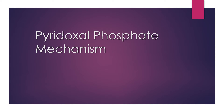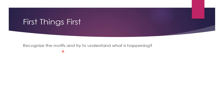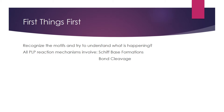Hello and welcome to an SJ Brothers lecture video. For this video I'm going to be talking about pyridoxal phosphate and its mechanism. It is vitamin B6, just so you know. First things first, you have to recognize the motifs and try to understand what is happening in the mechanism itself, because memorization is not really going to help you. All PLP reaction mechanisms involve Schiff base formations, bond cleavage, and quinonoid intermediate structures.